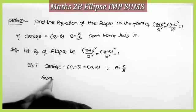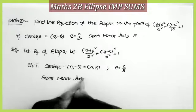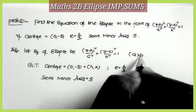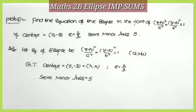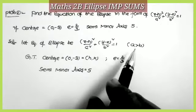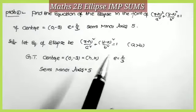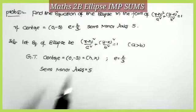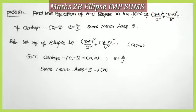We consider either the case a > b or a < b — both are correct and marks are awarded for either. I am taking the case a > b. When a > b, the semi-minor axis equals b. So the value of b is given as 5.